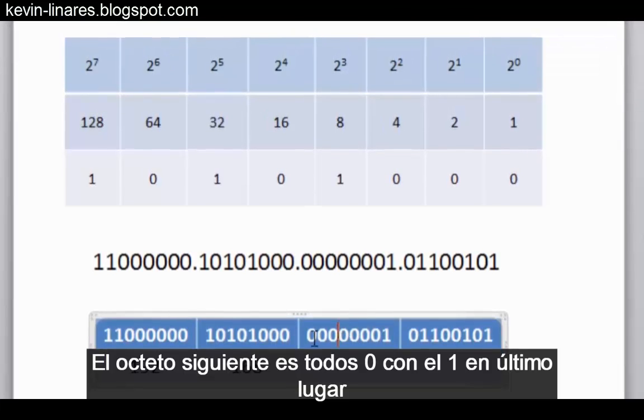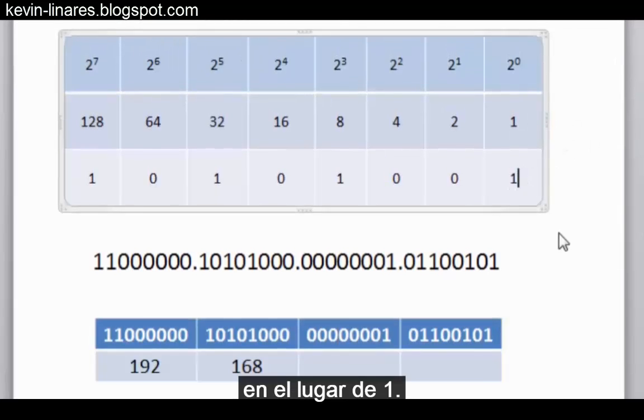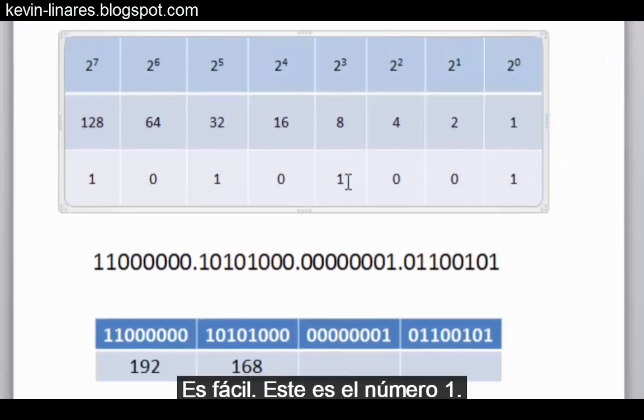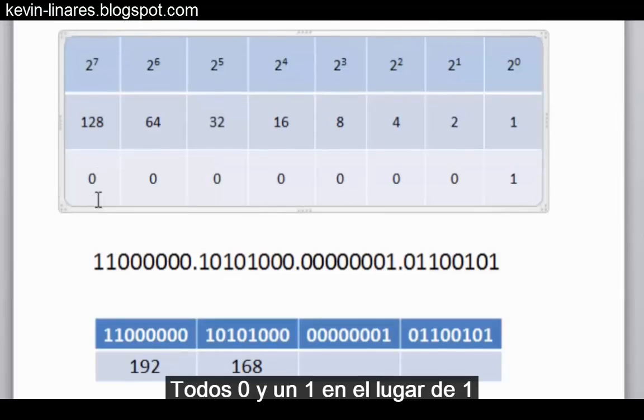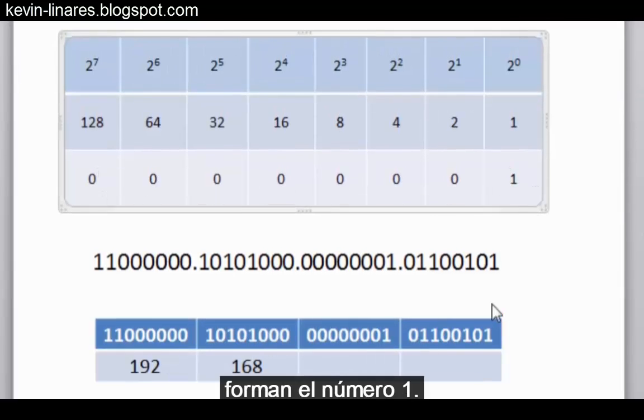The next octet is all zeros with a 1 in the last place in the ones place. This is easy. This is the number 1.